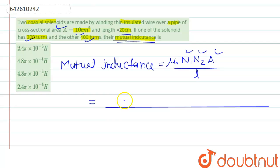The value of mu naught is 4 pi 10 to the power minus 7, N1 is 300, N2 is 400, and area is 10 centimeter square. So if we write 10 centimeter square in meter square, it will be 10 to the power minus 3 meter square. And length that is 20 centimeter, so if we write in meter, it will be 0.2.